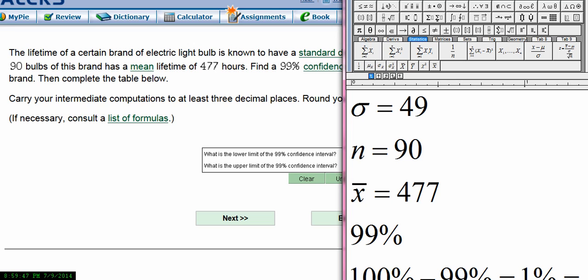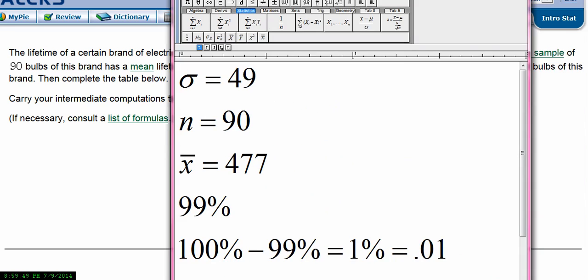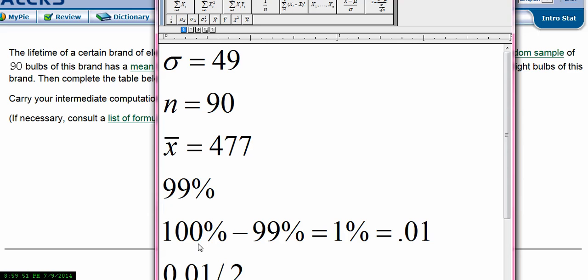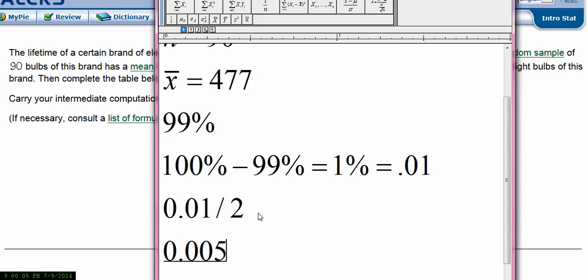So in order to find a 99% confidence interval, we have to find out what's in the tails. 100% minus 99% is going to be 1%. When you write that as a decimal, it's 0.01. So 0.01 is going to be in the tails. So in order to find out how much is in each tail, you have to divide that by 2. And so if you take 0.01 divided by 2, you'll get 0.005.